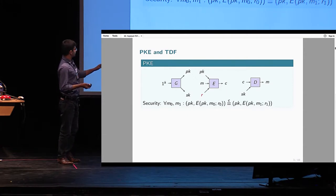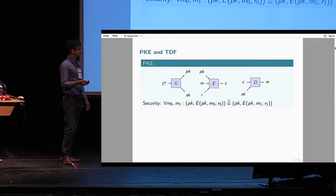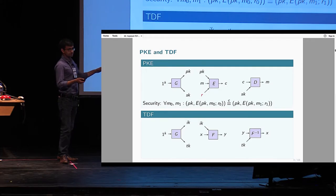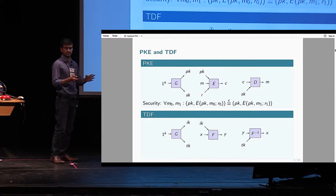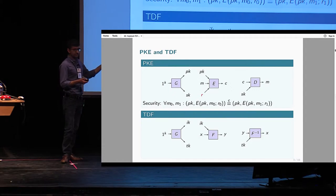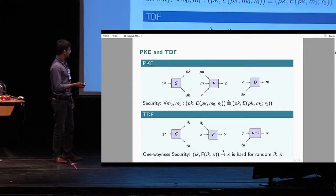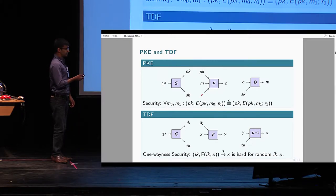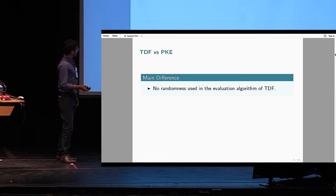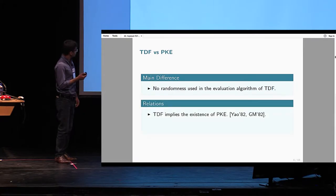In terms of security we have the basic notion of semantic security, which says that encryptions of any two plaintexts should be computationally indistinguishable. Trapdoor functions are defined exactly like public encryption with the only difference that the encryption algorithm — now called the evaluation algorithm — does not take any randomness as input. This means the decryption algorithm, now called the inversion algorithm, can recover the entire input to the trapdoor function evaluation algorithm. A main distinctive feature of trapdoor functions is that no randomness is used in the evaluation algorithm.